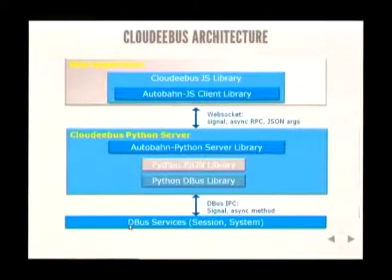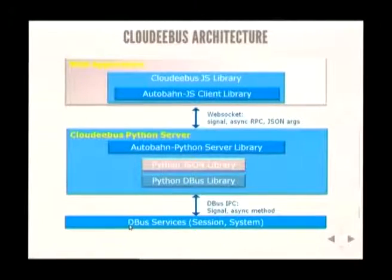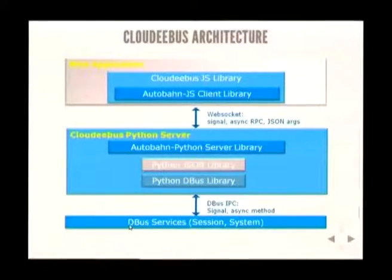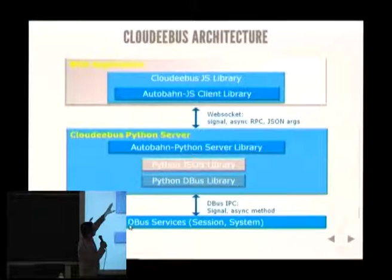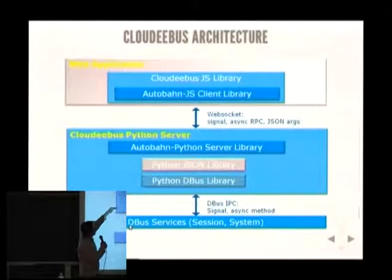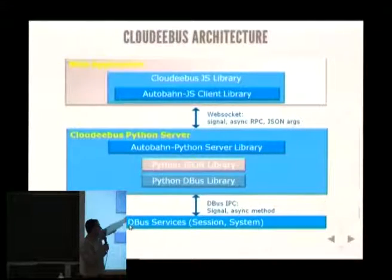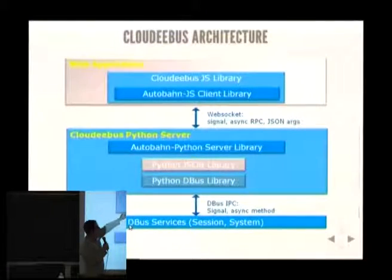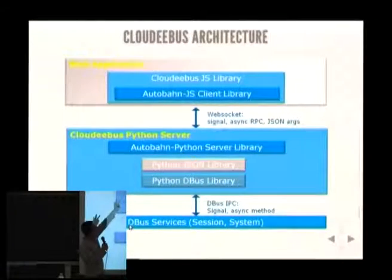How do we do it? The global picture: we have a Python server that acts as a middleman between the DBus services and the web app. It uses Autobahn, a Python framework that does RPC and pub/sub signaling, which is built on Python Twisted. It uses the Python DBus library on the DBus end and the Python JSON library to exchange JSON messages through WebSockets.